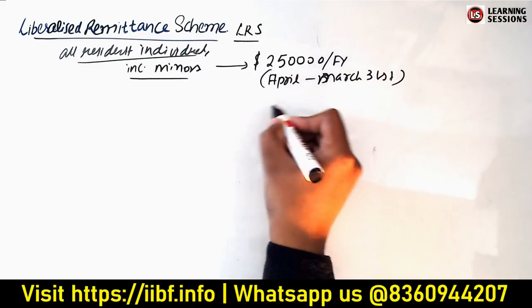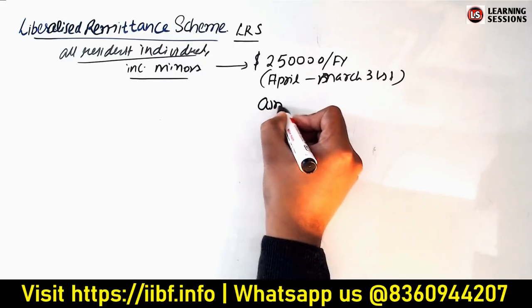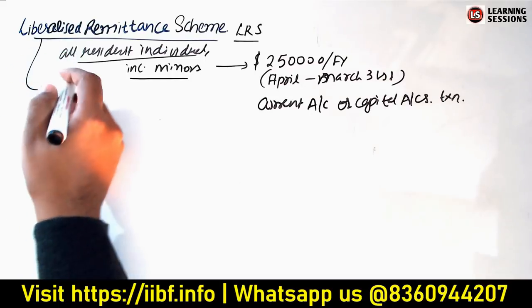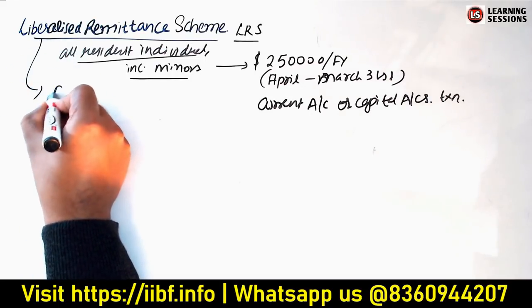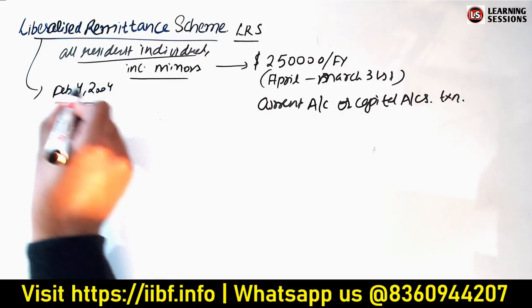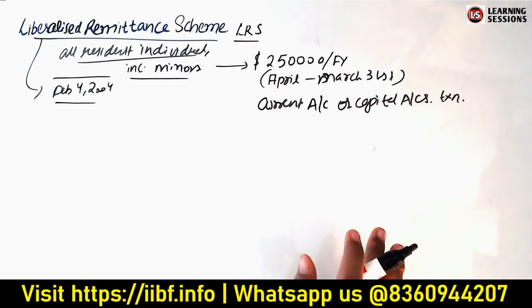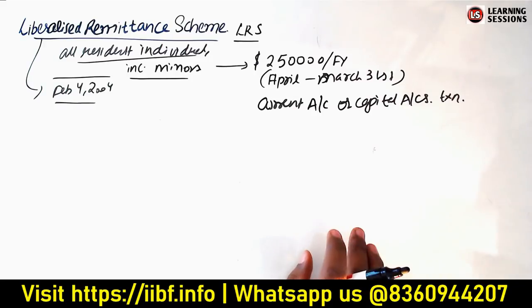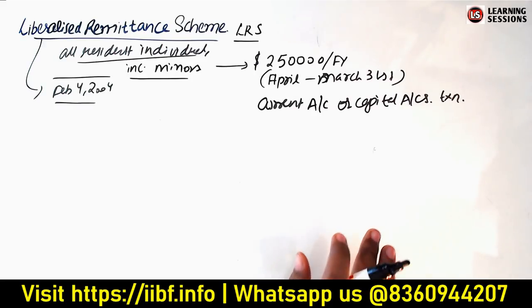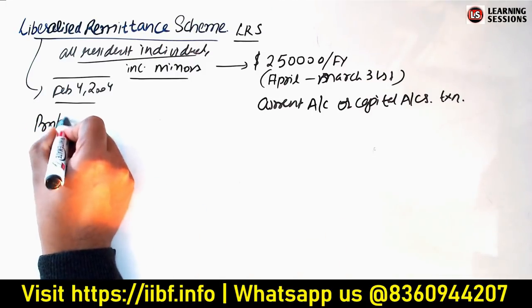This LRS scheme is not available to corporates, partnership firms, HUFs, and trusts. Now let us understand the prohibited items under LRS. Remittance cannot be made for the purchase of lottery tickets. Similarly, any items prohibited under Schedule 1 or Schedule 2 of the FEMA (Foreign Exchange Management) rules are also not permitted.